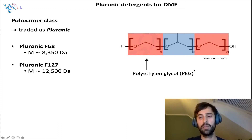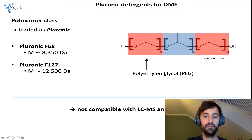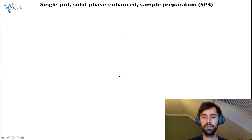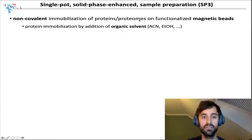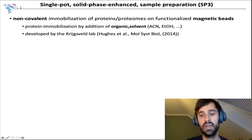So we wanted to use these detergents on the chip, but at some point remove them. For that, we used the well-known proteomics method, SP3. We already heard about SP3 yesterday, but for those not familiar, I'll quickly walk through it. In this protocol, proteins are non-covalently bound to magnetic beads. To achieve this immobilization, organic solvent is added to a mixture of proteins and beads, which leads to an aggregation-like reaction. This was introduced by the lab of Jürgen Krijgsveld from Heidelberg, and since then multiple modifications and applications have been published.